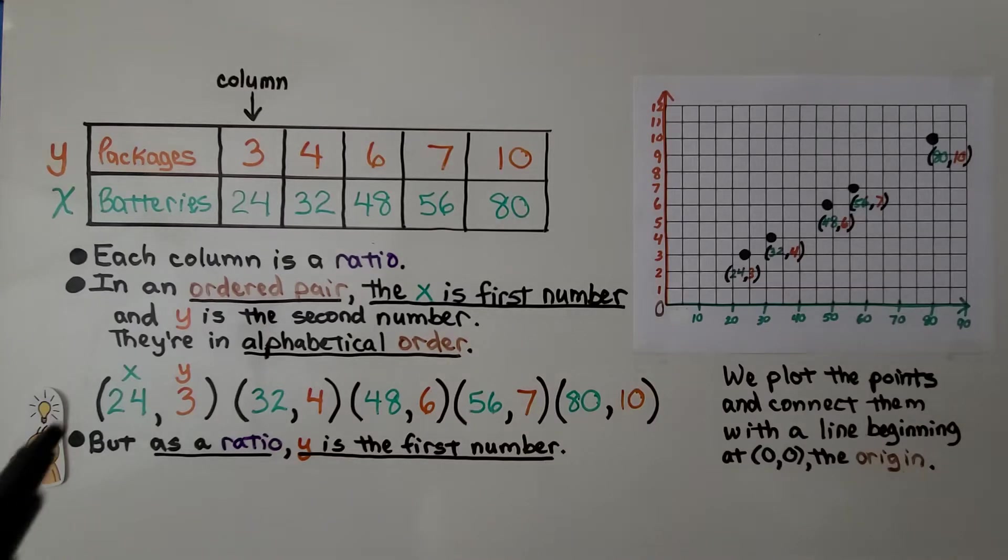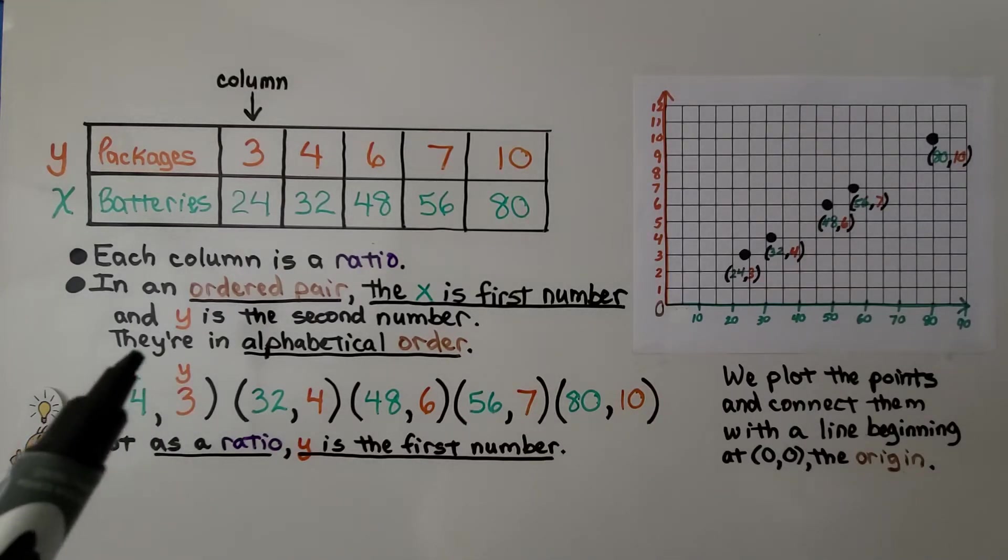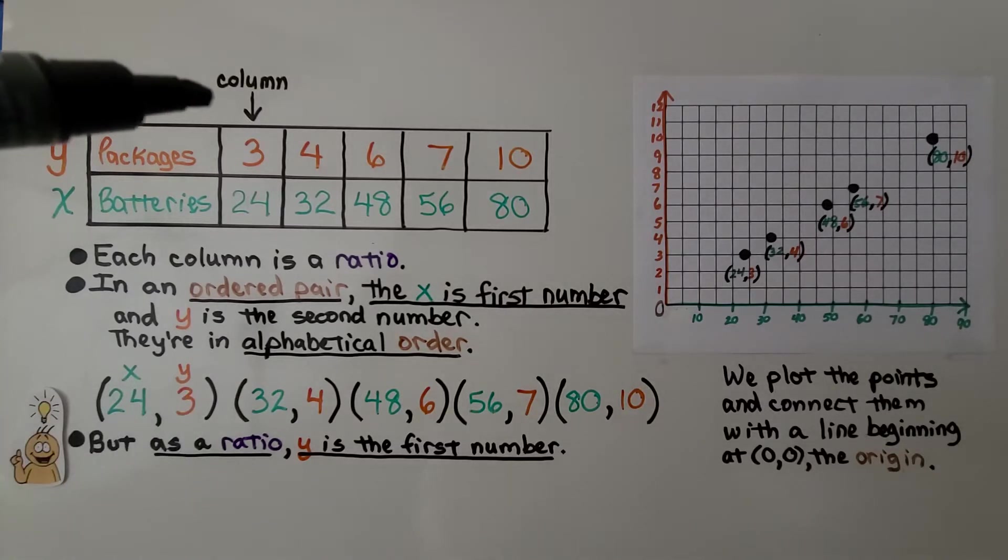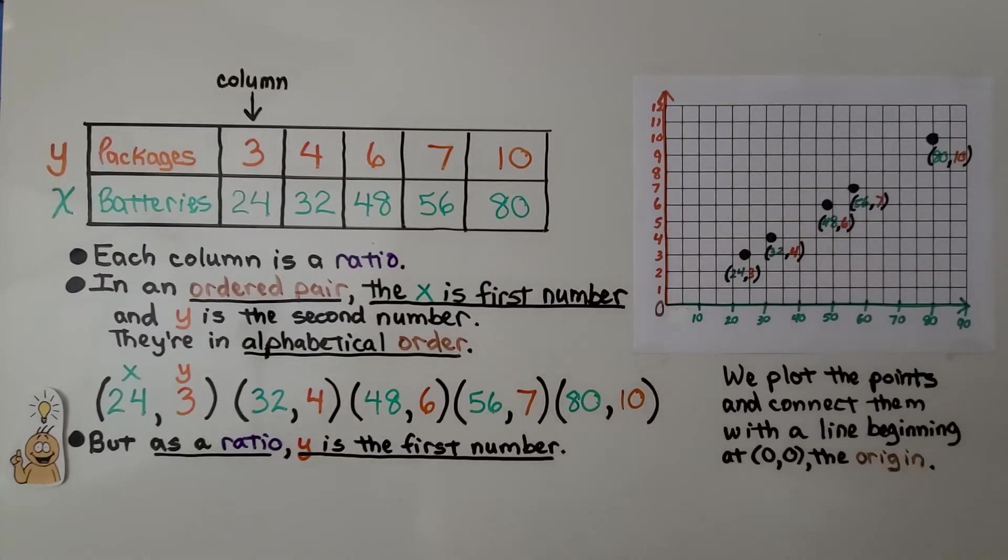In an ordered pair, the x is the first number, and the y is the second number. But notice for the ratio in this column, we've got the y first and then the x. Well, in an ordered pair, they're in alphabetical order. x, y, and then we'd have z, wouldn't we? So these are in alphabetical order. But as a ratio, y is the first number. And we can plot these points, 24 for x, 3 for y.